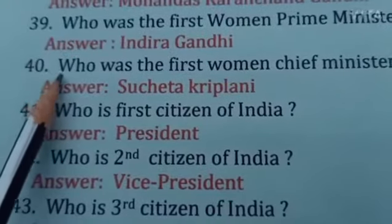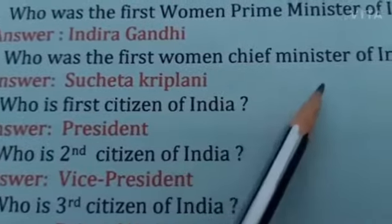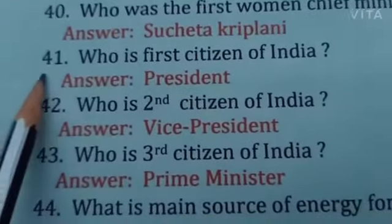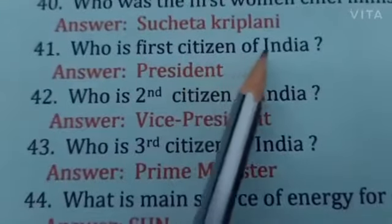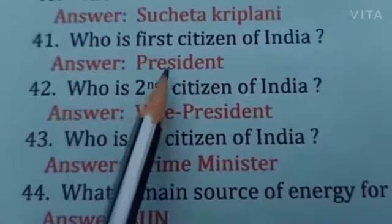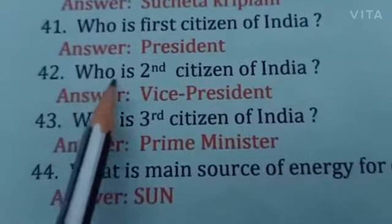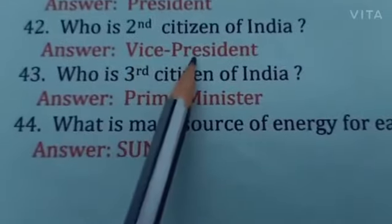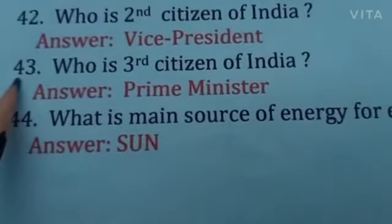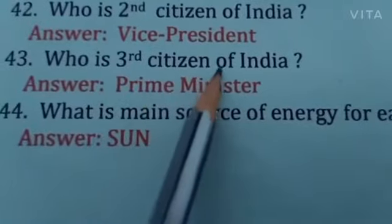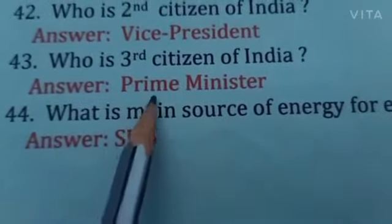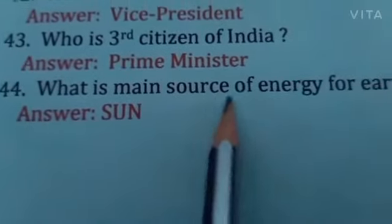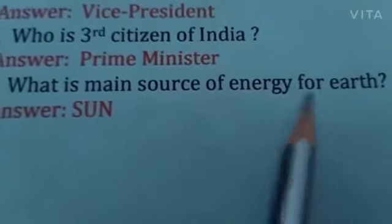Who was the first woman Chief Minister of India? Answer: Sucheta Kriplani. Question number 41: Who is the first citizen of India? Answer: President. Number 42: Who is the second citizen of India? Answer: Vice President. Question number 43: Who is the third citizen of India? Answer: Prime Minister. Question number 44: What is the main source of energy for Earth? Answer: Sun.